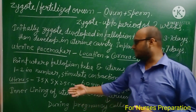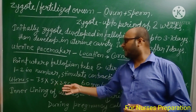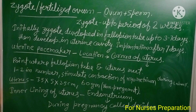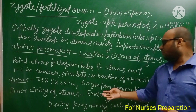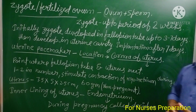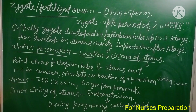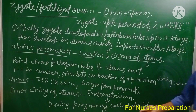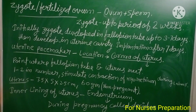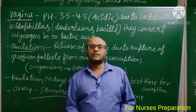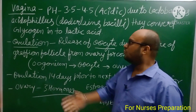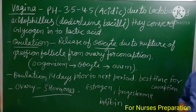The dimensions of the uterus are 7.5 centimeters long, 5 centimeters in width, and 2.5 centimeters in thickness in the non-pregnant stage. The weight of the uterus is approximately 60 grams. The inner lining of the uterus is known as the endometrium, and during pregnancy this endometrium layer is also called the decidua.